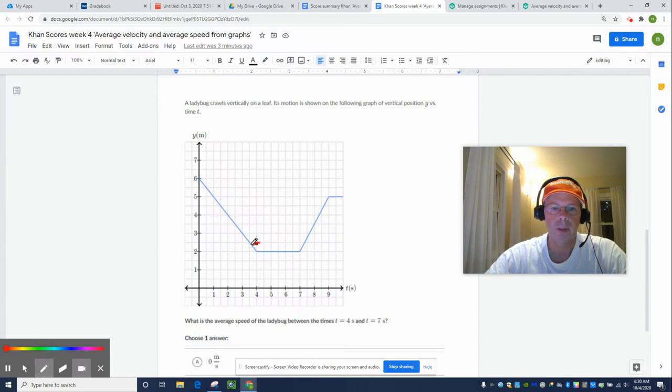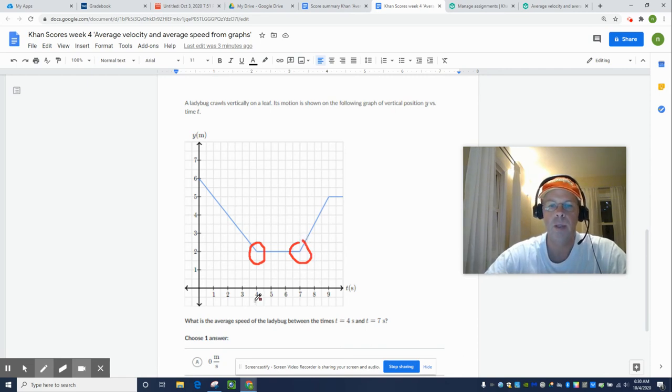The interval they're interested in right here is from this point to this point. So, at four seconds, that's the x, we are two meters away. And then at seven seconds, we are still two meters away.